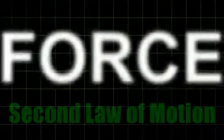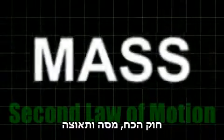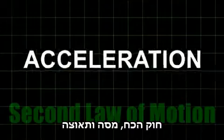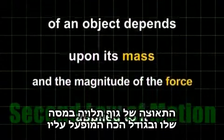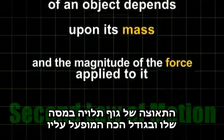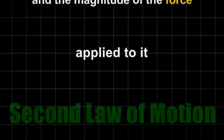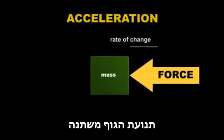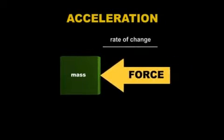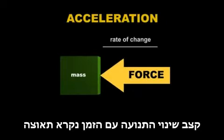The second law of motion: the law of force, mass and acceleration. The acceleration of an object depends upon its mass and the magnitude of the force applied to it. When an unbalanced force acts upon an object, the motion of the object changes. The rate of this change over time is called acceleration.